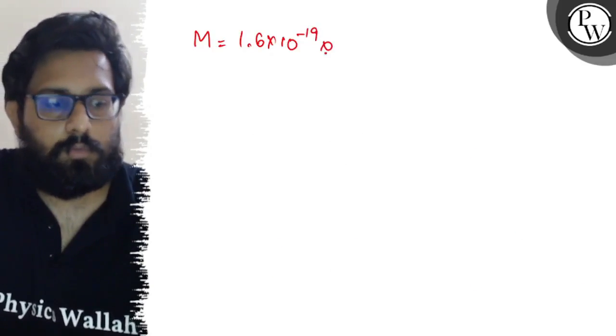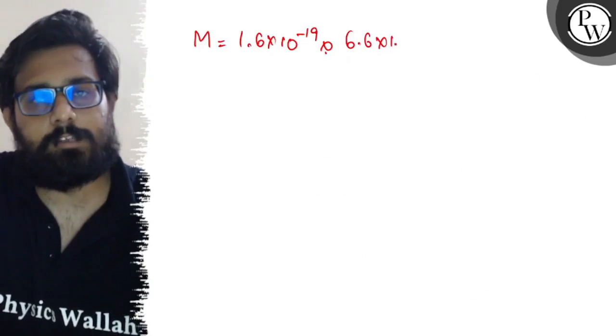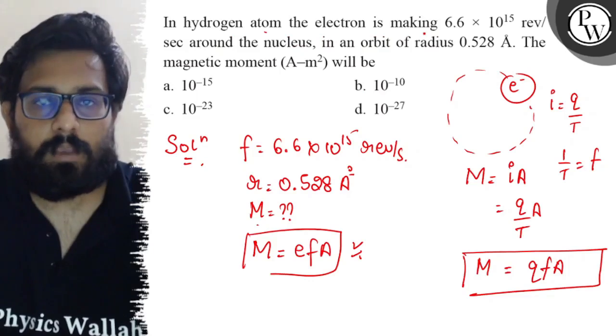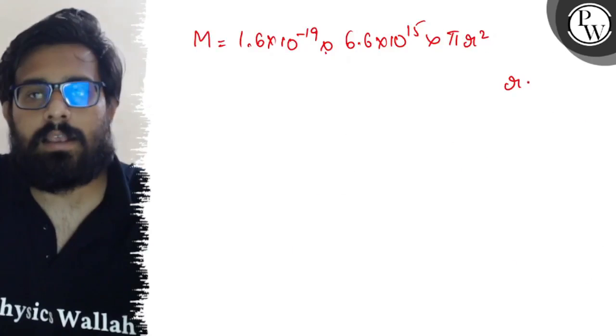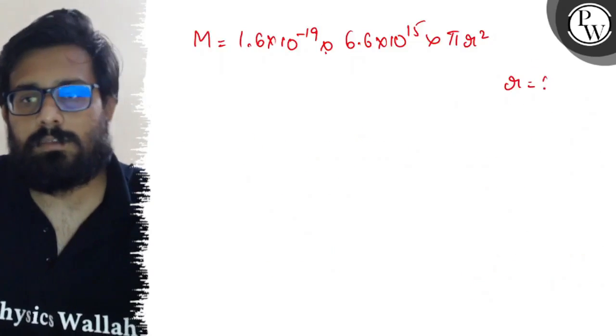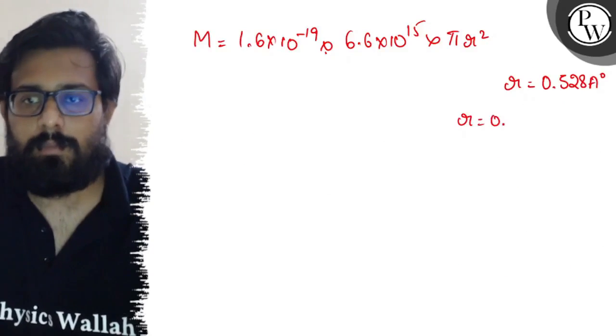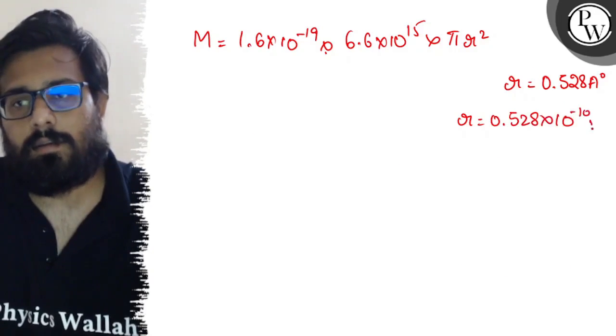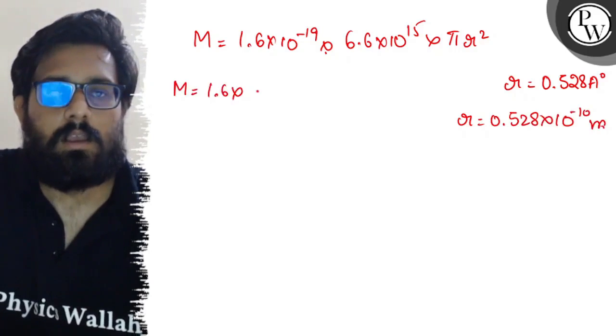Now just put the values. M can be written as 1.6 × 10^-19 × frequency 6.6 × 10^15 × area. Area is πr², and r is 0.528 angstrom. 0.528 angstrom, if you convert it into meters, can be written as 0.528 × 10^-10.